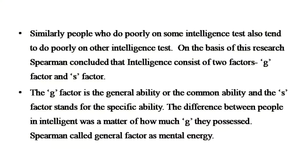The G-factor is the general ability or the common ability, and the S-factor stands for the specific ability. The difference between people in intelligence was a matter of how much G they possessed, and Spearman called this general factor as mental energy.